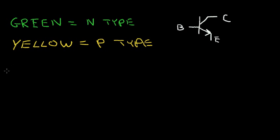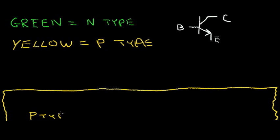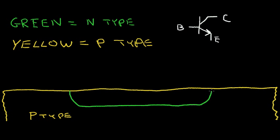Let's start with a silicon wafer. The thickness of the wafer is in this direction, and this is a P-type starting material. The first step is to diffuse into this P-type an N-type region, shown here in green. This is a very concentrated N-type material called the buried layer, or BL.